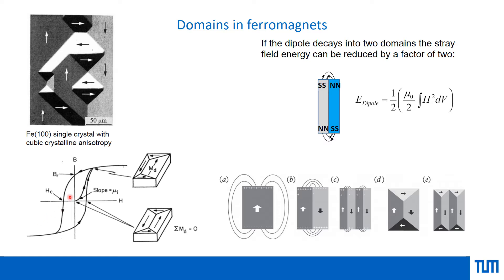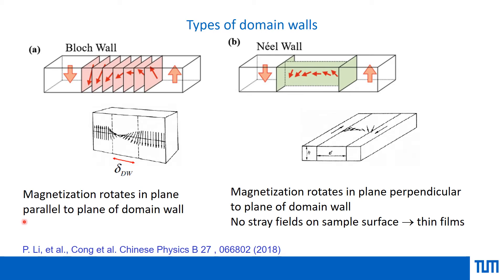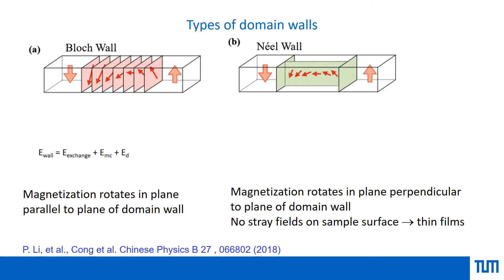We have discussed 180-degree and 90-degree domains as simple examples, though much more complicated situations exist. Similarly, there are many types of domain walls — the region between two domains. We will focus on the 180-degree domain case to understand how the domain wall between two regions looks. A domain wall separates two large regions where magnetization points in opposite directions; though shown large here, they are typically in the nanometer range.